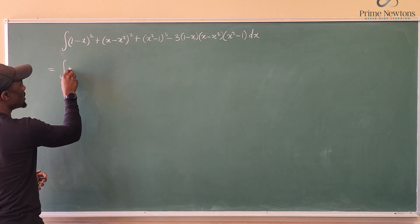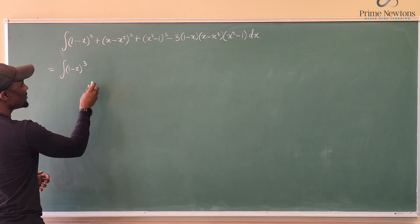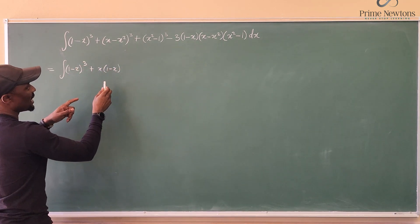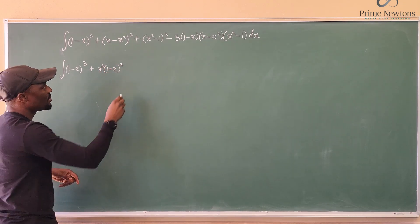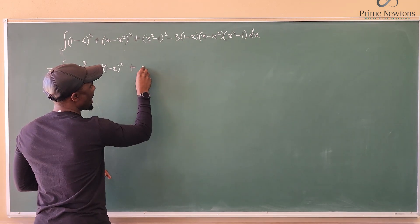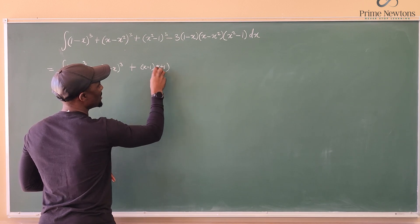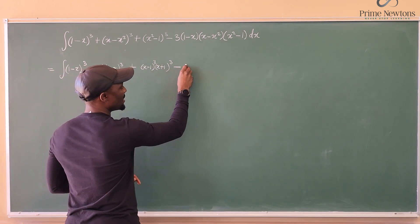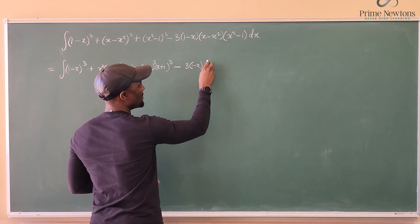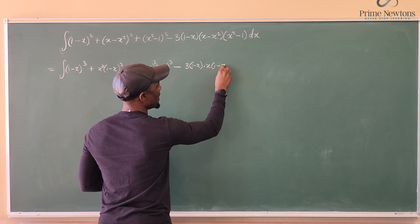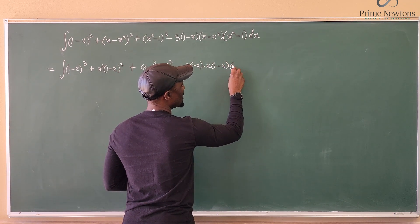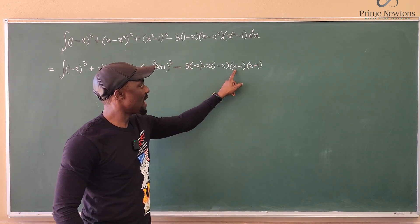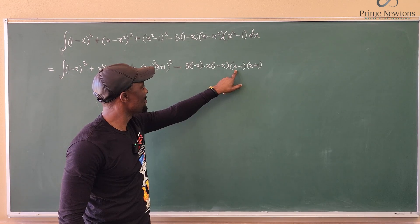Sometimes it might be hard to see, so the next step is to rewrite: this is the integral of (1-x)³ plus x·(1-x)³, and then (x-1)(x+1) each cubed — because the whole expression is cubed — minus the term with 3x·(1-x). I can factor x out here, and factor (x-1)(x+1) from the third term.